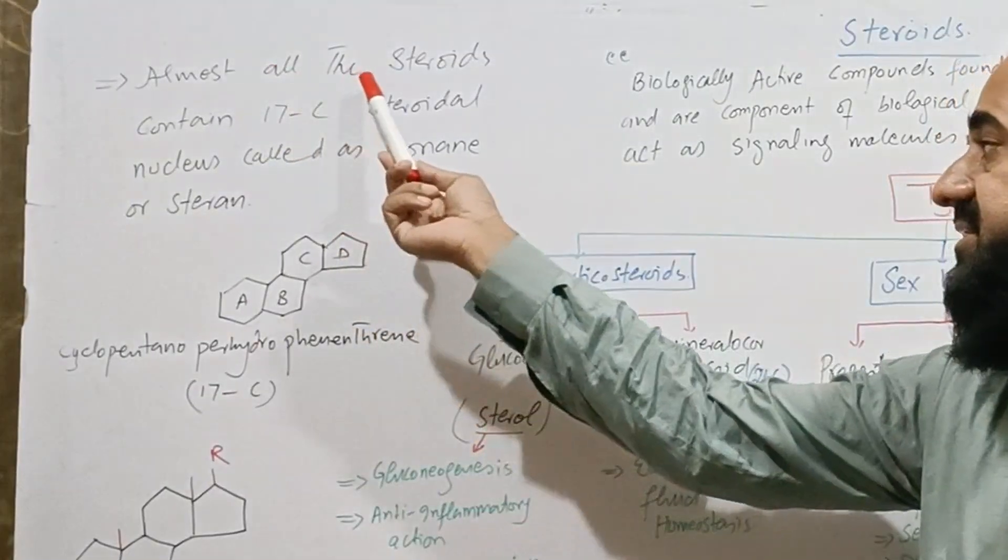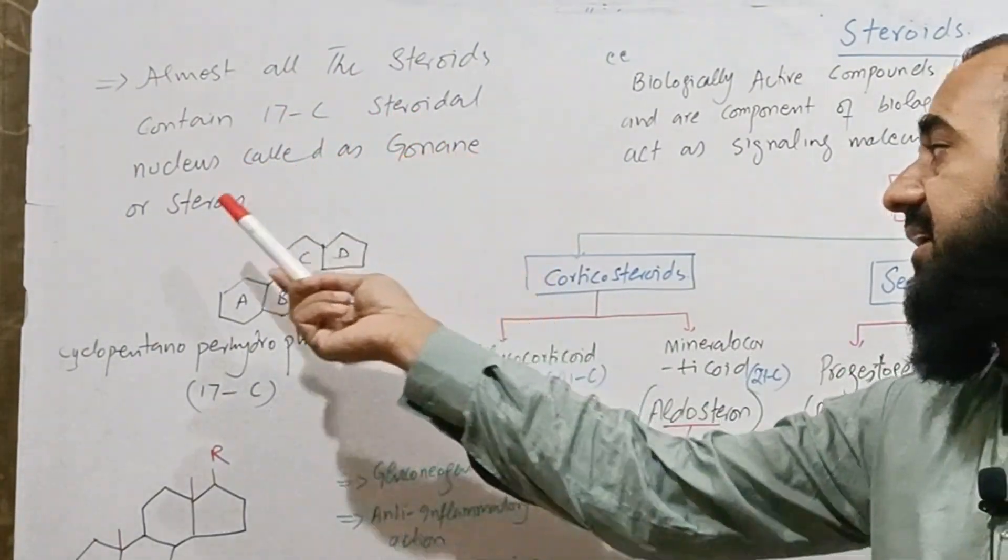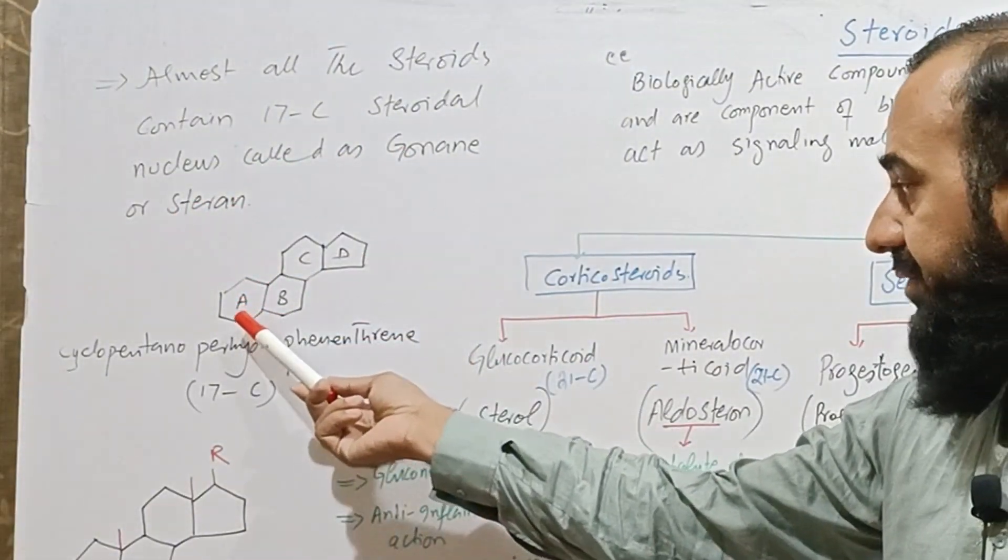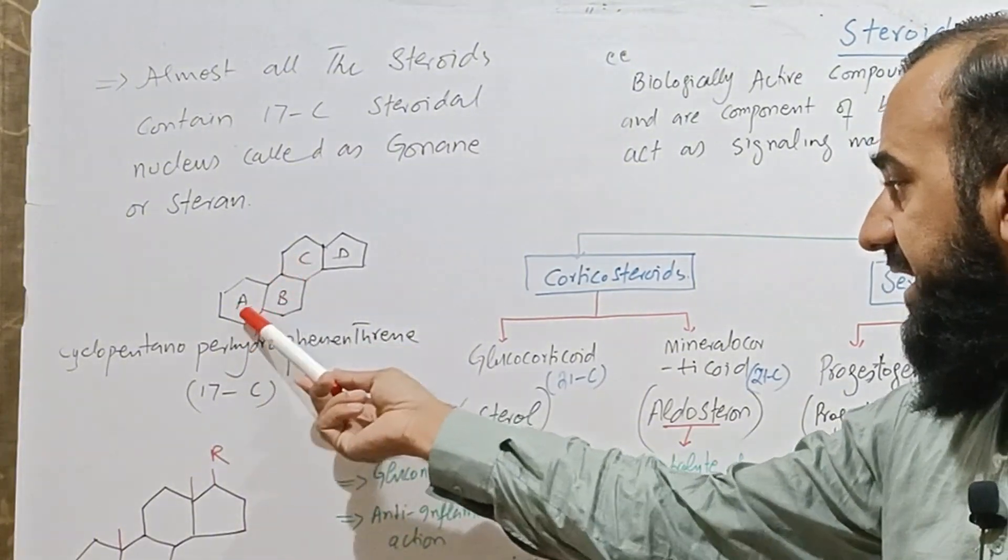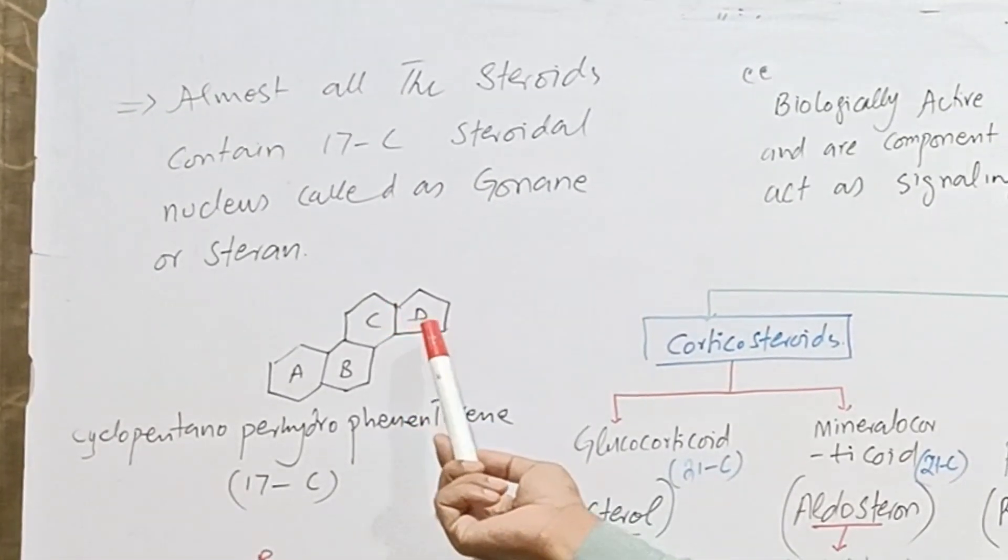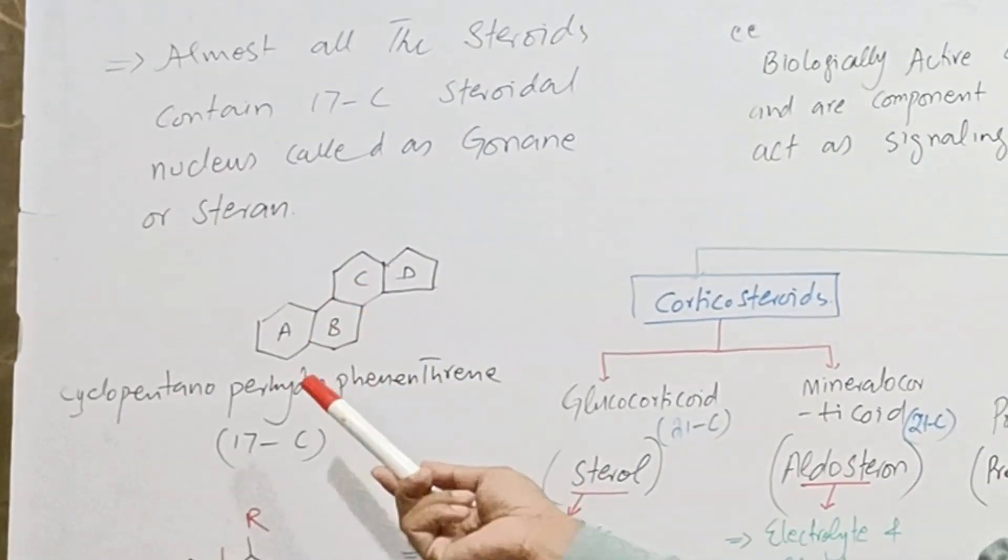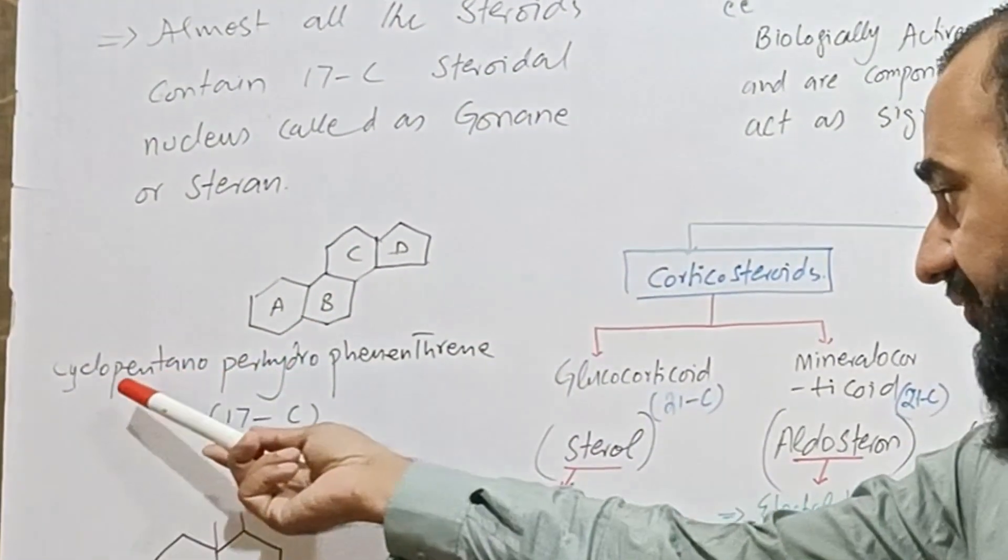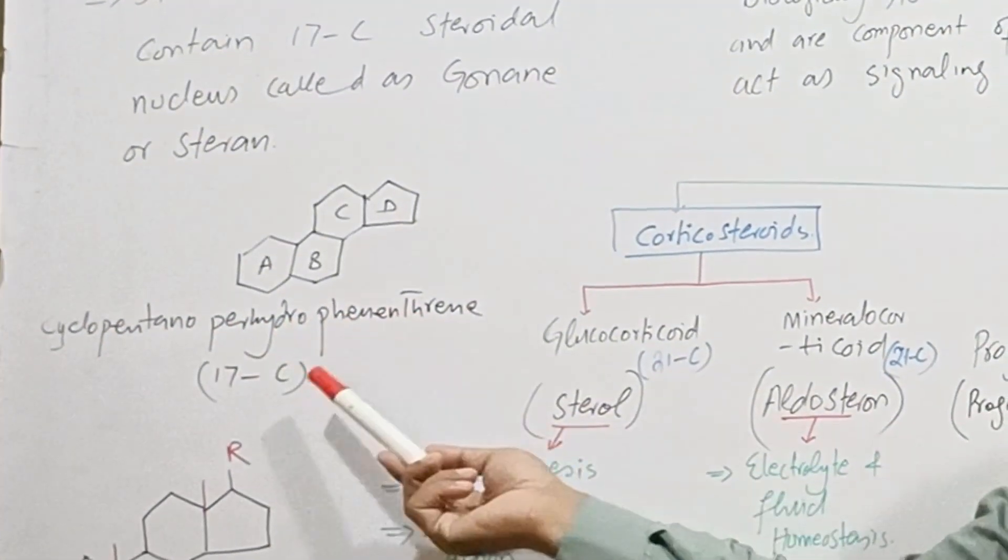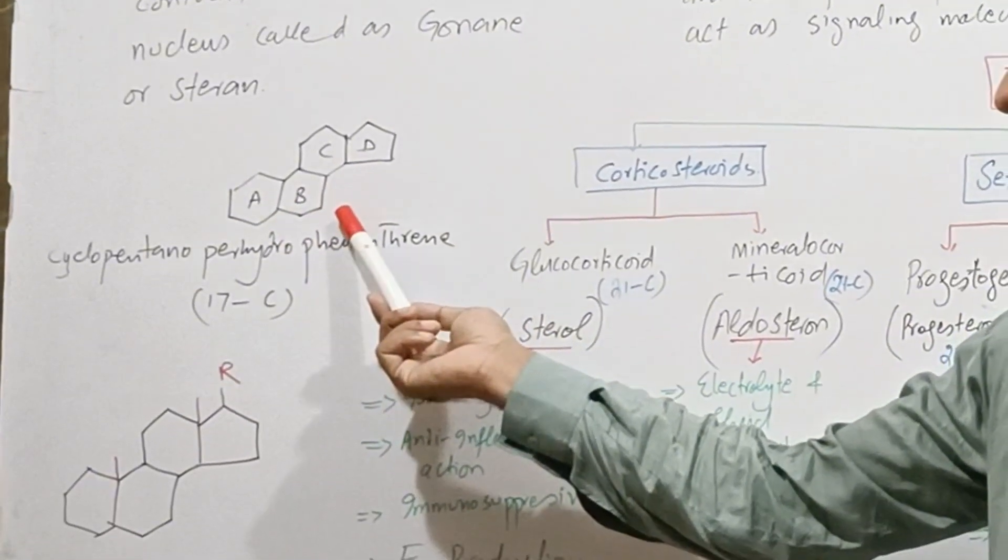Almost all the steroids contain 17 carbon steroidal nucleus called gonane or styran. So the main steroidal nucleus consists of four rings A, B, C, D, and if we see ring D, it is five-membered and all the other rings are six-membered. The name of this nucleus is cyclopentano perhydrofenanthrine. This type of nucleus is present in almost all the steroids.